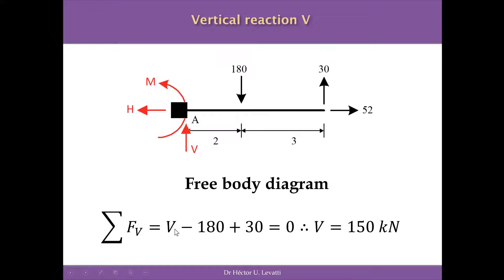To find the vertical reaction, we use the summation of forces in the vertical direction: V (positive, upward) minus 180 (downward) plus 30 (upward) equals zero. Solving, V equals 150 kN. Because the value is positive, we don't need to correct the direction — it was correct from the beginning.